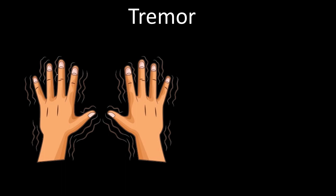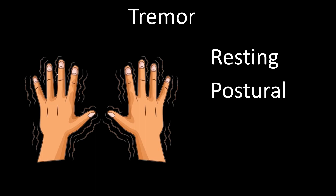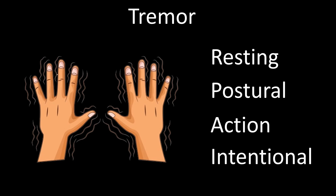Tremor is defined as an involuntary rhythmical alternating movement. It is convenient to classify tremor according to the state during which it occurs. Using this parameter, we can classify tremor as resting, postural, action, and intentional.